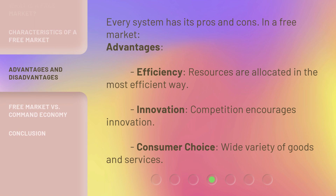Every system has its pros and cons. In a free market, advantages include: efficiency — resources are allocated in the most efficient way; innovation — competition encourages innovation; and consumer choice — a wide variety of goods and services.